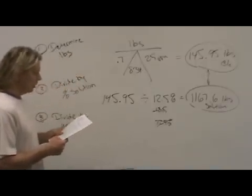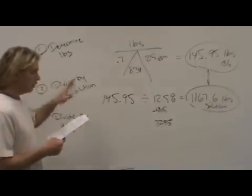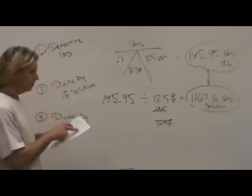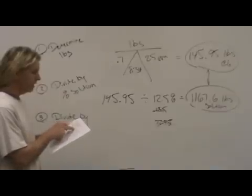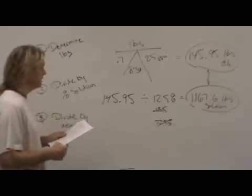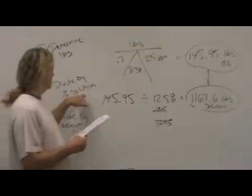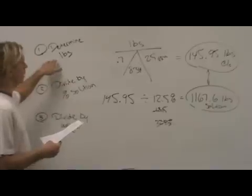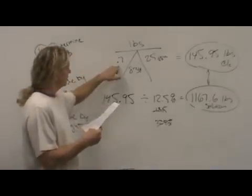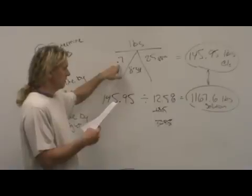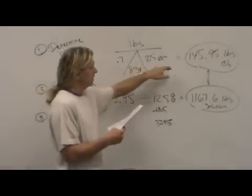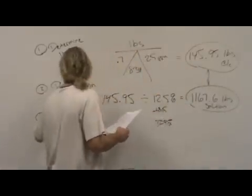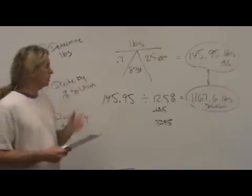This next problem is basically this exact problem taking it to the next level. A flow of 700,000 gallons per day requires a dose of 25 parts per million chlorine. If you're using 12.5% sodium hypochlorite, how many gallons of solution are needed? Instead of how many pounds of your solution, how many gallons of that solution? So you would solve the same way. Remember, you take that 700,000, convert it to a million gallons, 0.7 times 8.34 times 25. You get 145.95 pounds of chlorine.